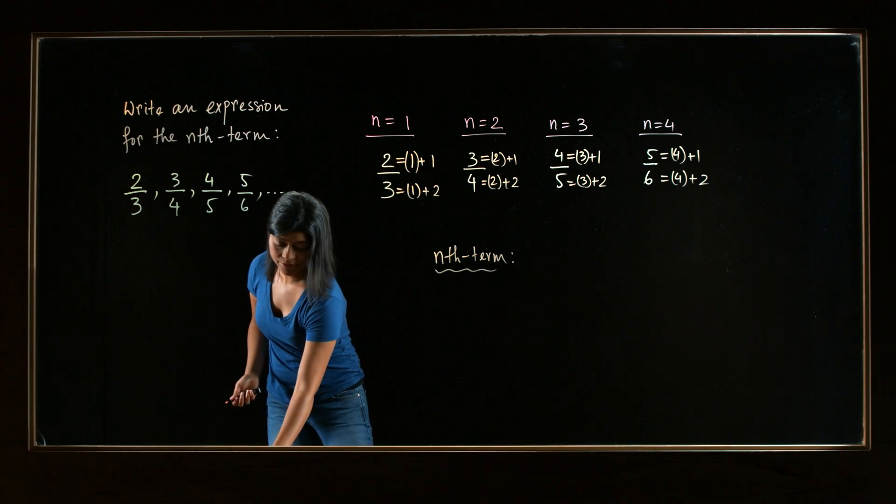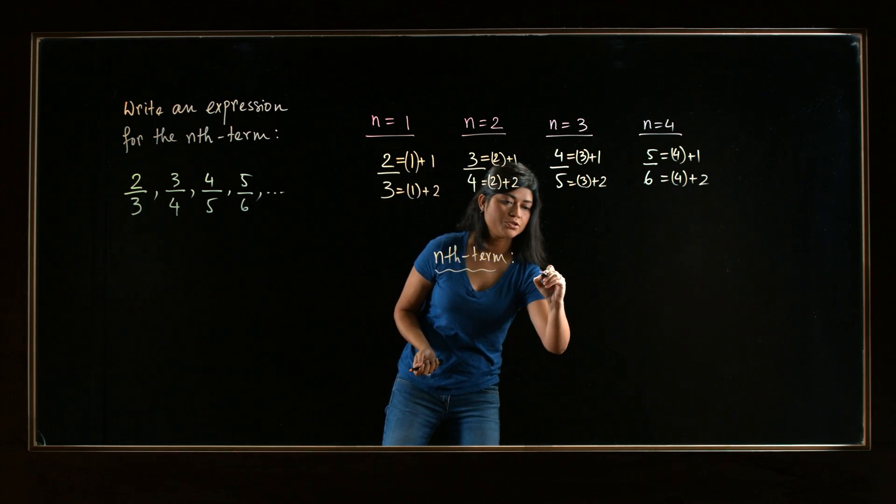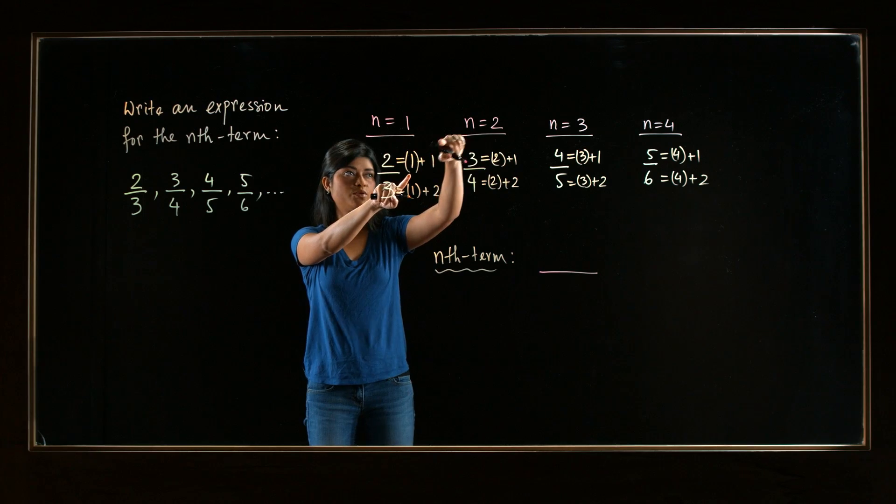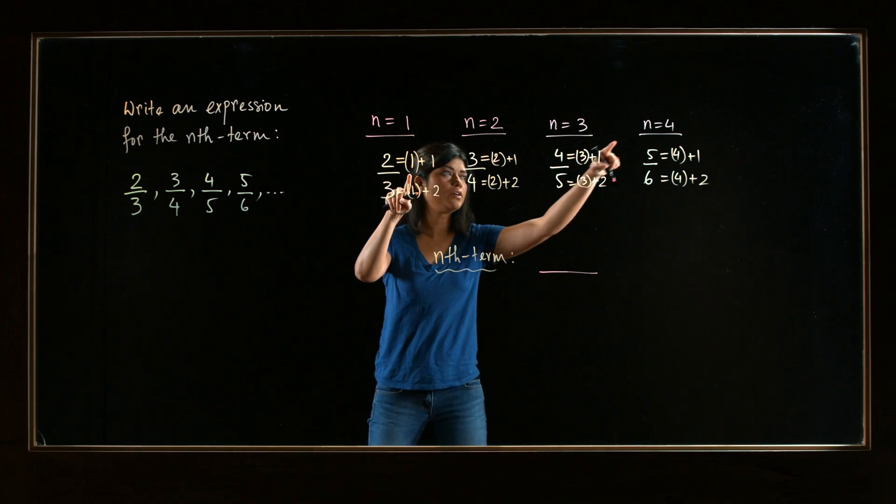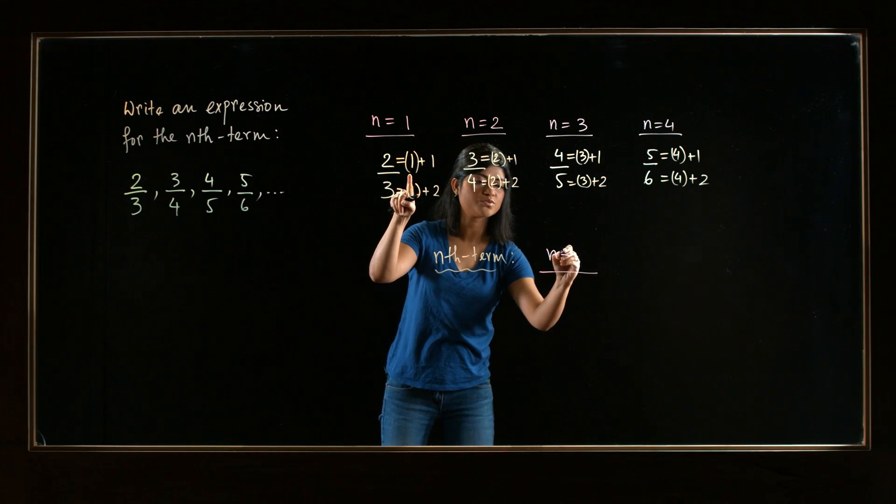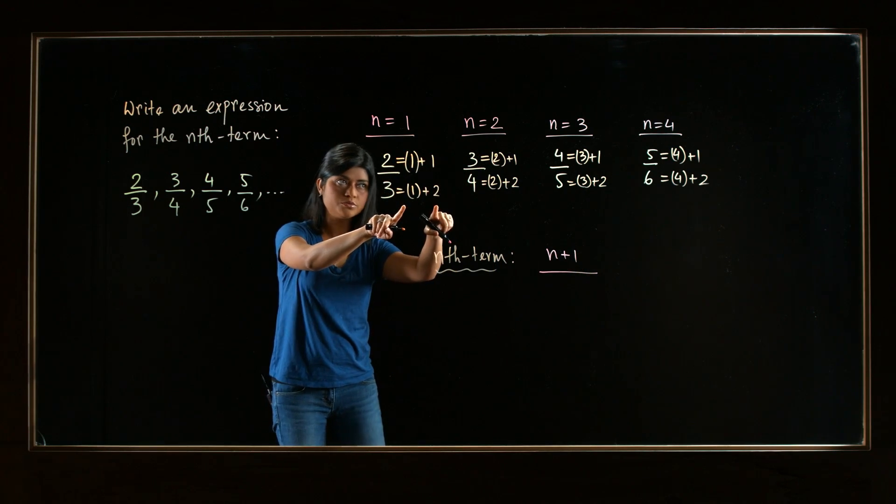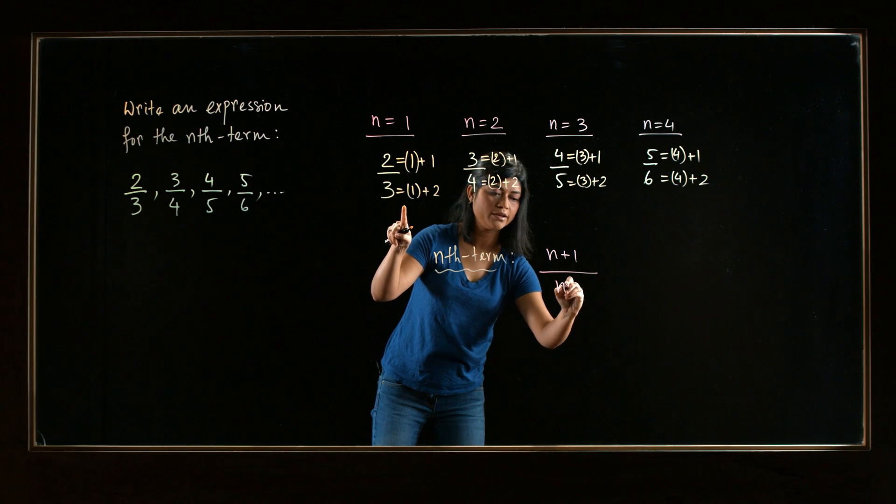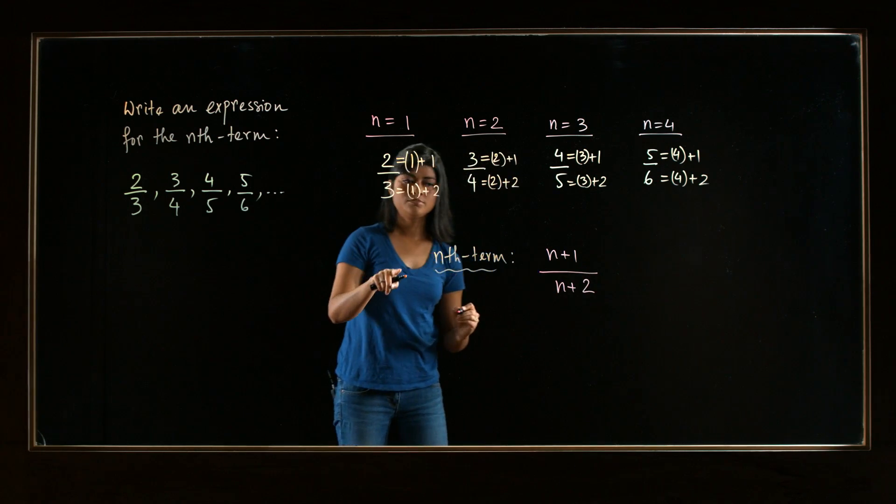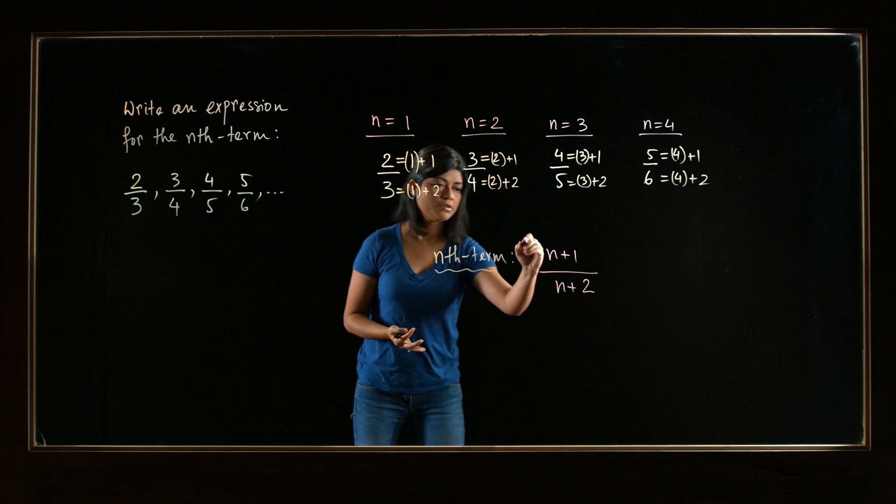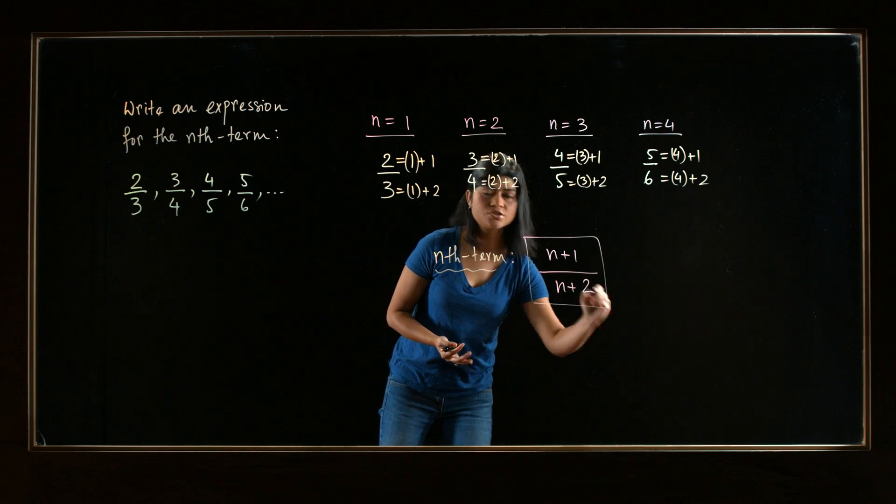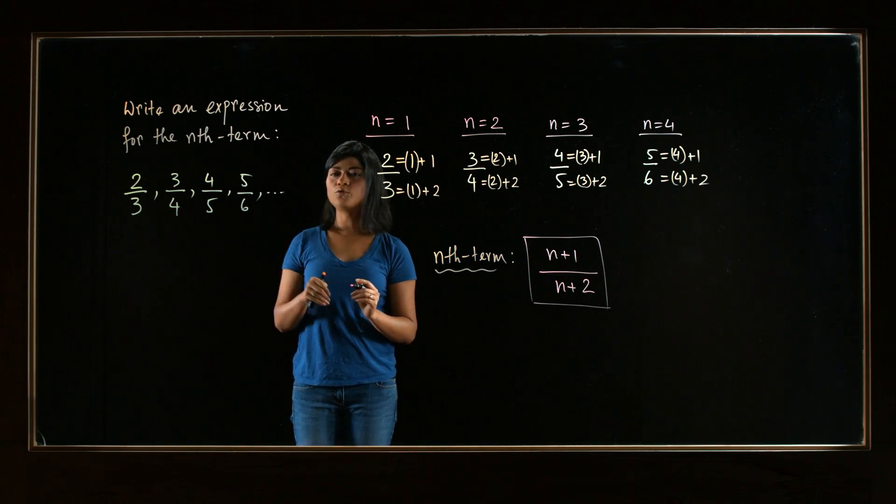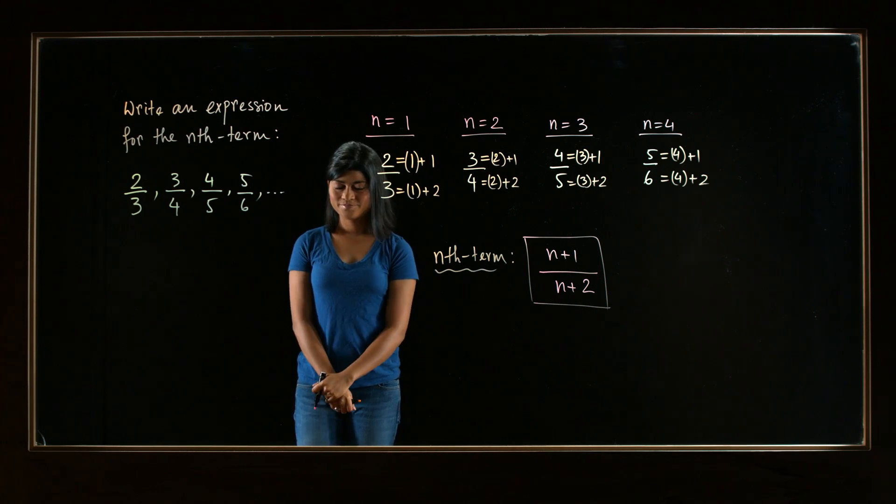What's in the numerator? Look here. 1 plus 1, 2 plus 1, 3 plus 1, 4 plus 1. So n plus 1. Denominator, 1 plus 2, 2 plus 2, 3 plus 2, 4 plus 2. So n plus 2. And that's the general expression or the nth term for this particular sequence, whose first four terms are given to us. Thank you.